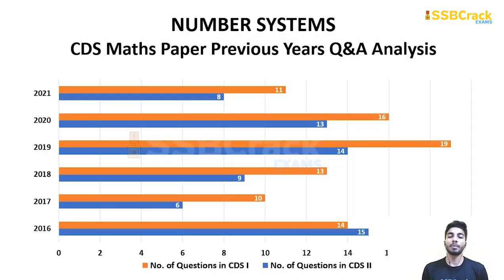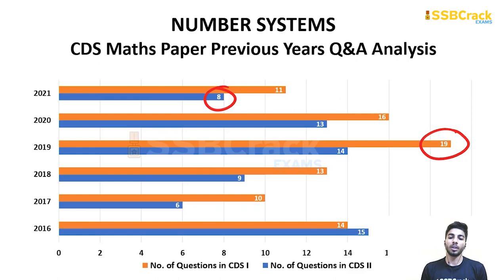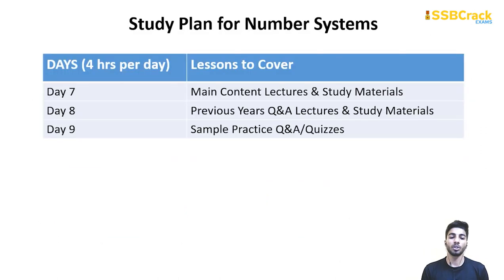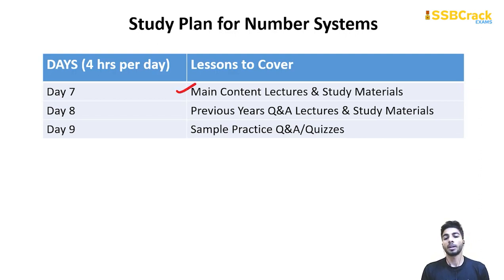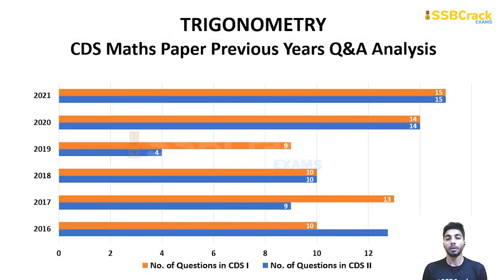The next topic is Number System. The maximum number of questions asked is 19 and the minimum is 8. This is a very important topic because the questions from it are very simple and easy. You have to devote Day 7 to Day 9 for Number System only, covering main content, previous year questions, and sample practice. After that, you come to Trigonometry, where the maximum number of questions asked is 15.